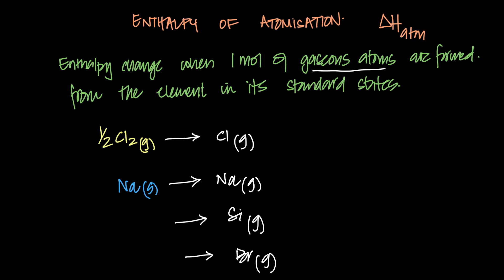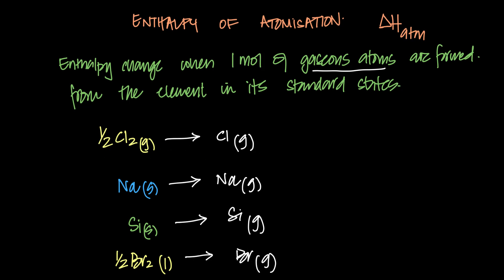Silicon is a solid macromolecule where all the bonds are broken to become gaseous atoms. Br₂ is a liquid — at room temperature its standard state is liquid, and since we need only one Br atom, we use half a mole of Br₂.